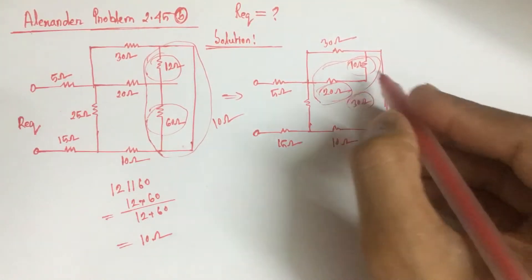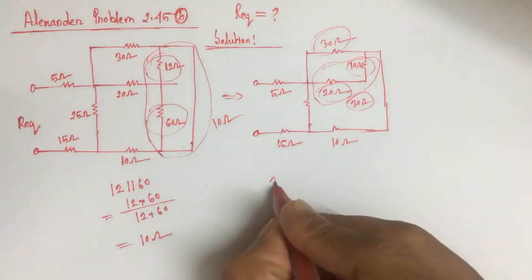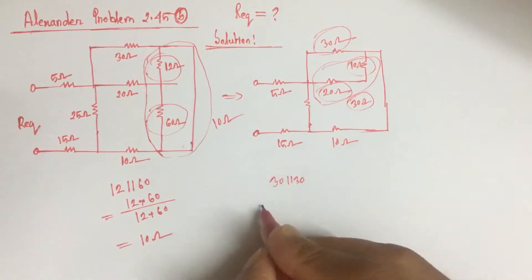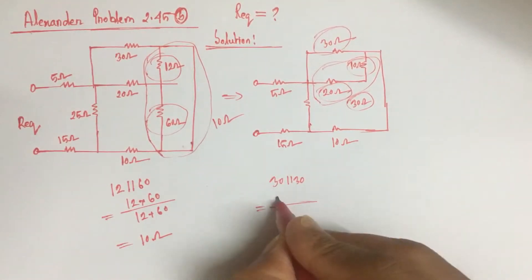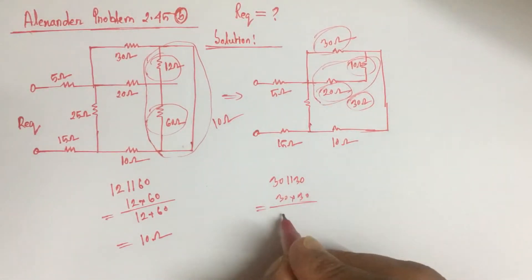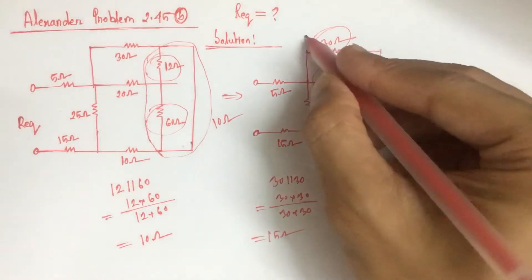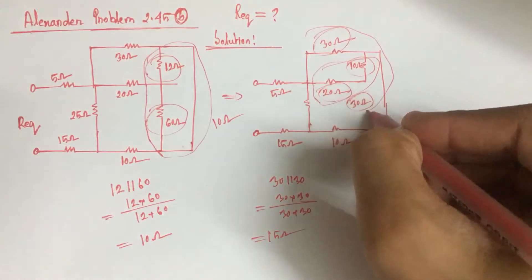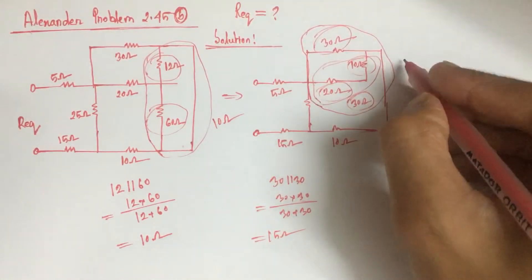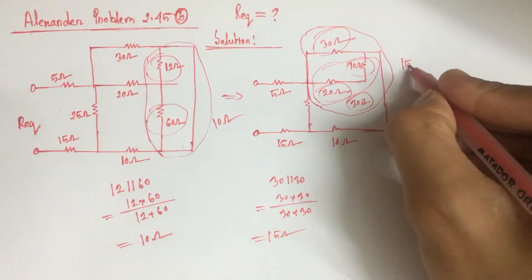Now, this 30 ohm is in parallel with 30 ohm. Two equal 30 ohm resistances can be replaced by a resistance of 15 ohm. The parallel resistance of this whole part is 15 ohm.